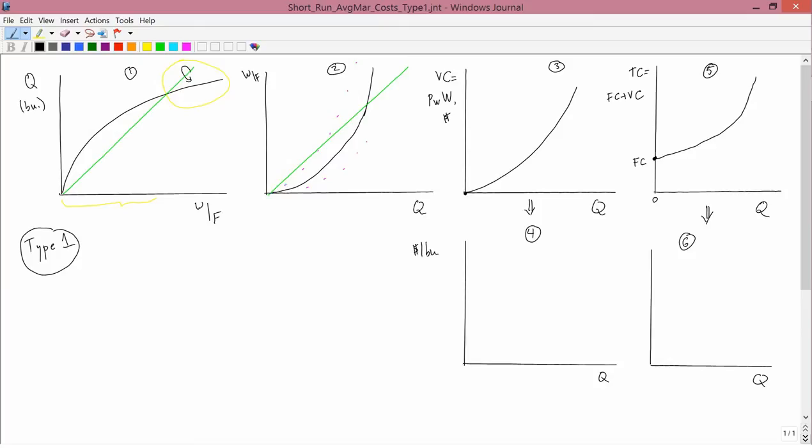The same is going to be true in graph 6. Graph 6 is going to come from slopes from graph 5. Slopes from graph 5 are going to be rise, which is dollars because total cost is measured in dollars, divided by run, which is bushels because quantity is measured in bushels. So rise over run, dollars per bushel.